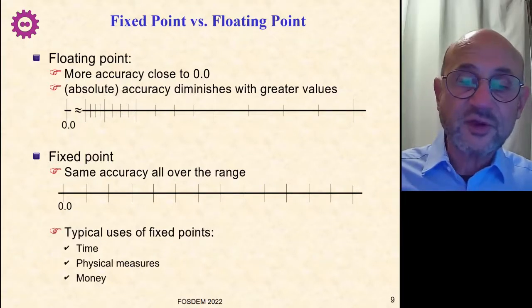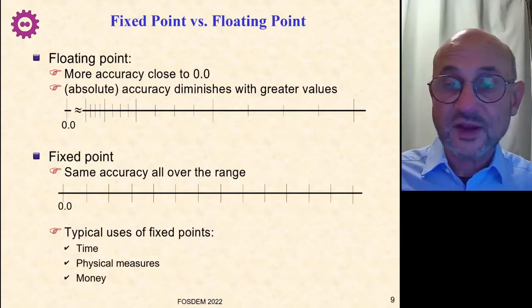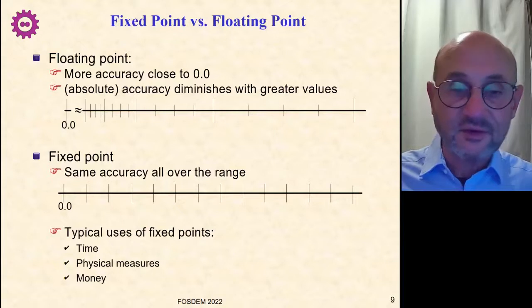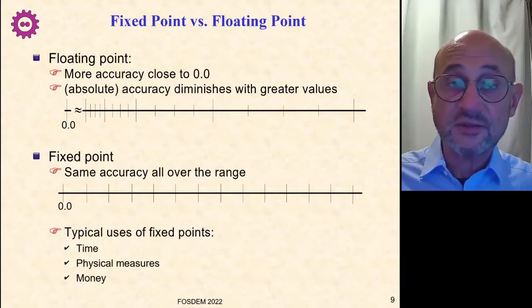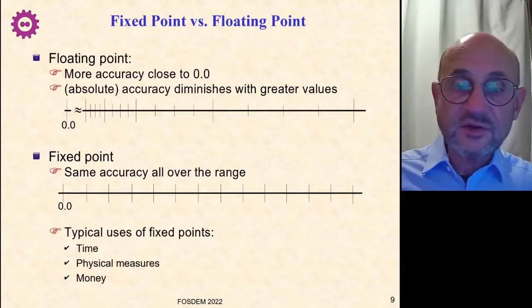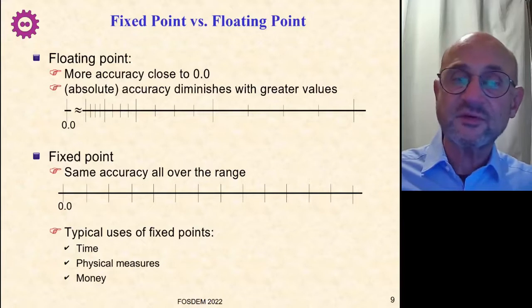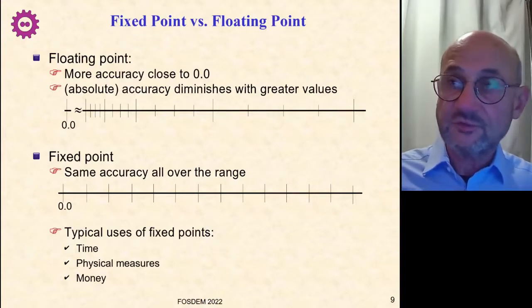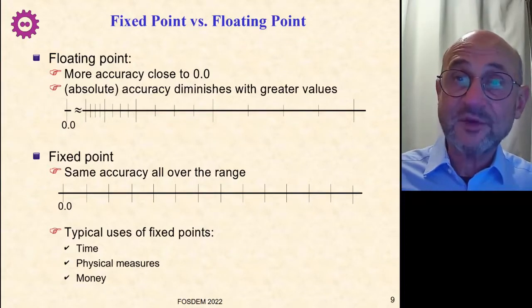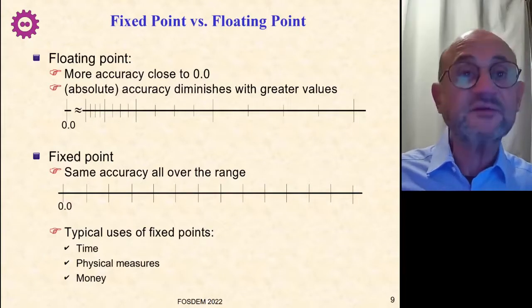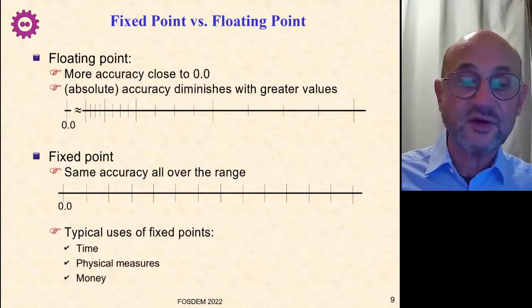Typically, fixed points are used to represent time. In general, in computers, you have a time zero, but it's arbitrary. I mean, unless you are modeling the Big Bang, you don't need more accuracy close to zero than away from zero. And if you use a floating point type to represent time, then as time passes, your uncertainty increases and that can be very annoying.